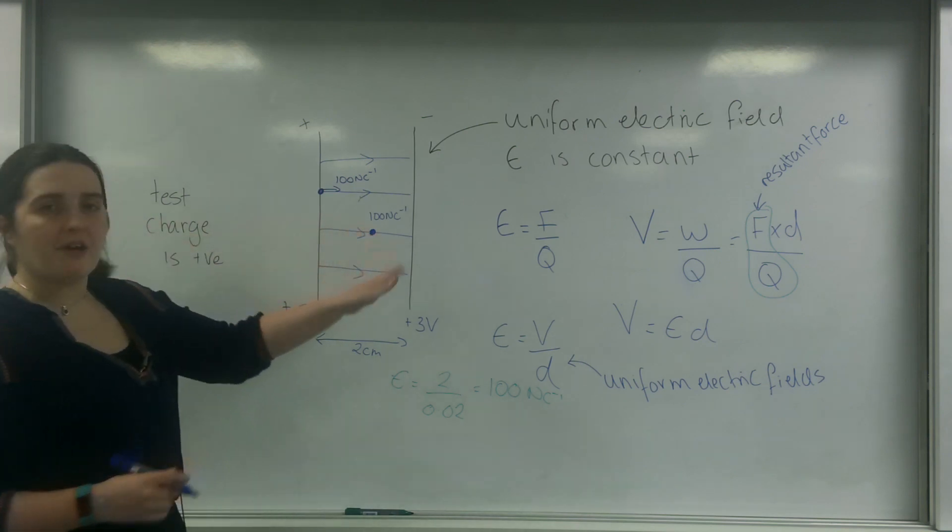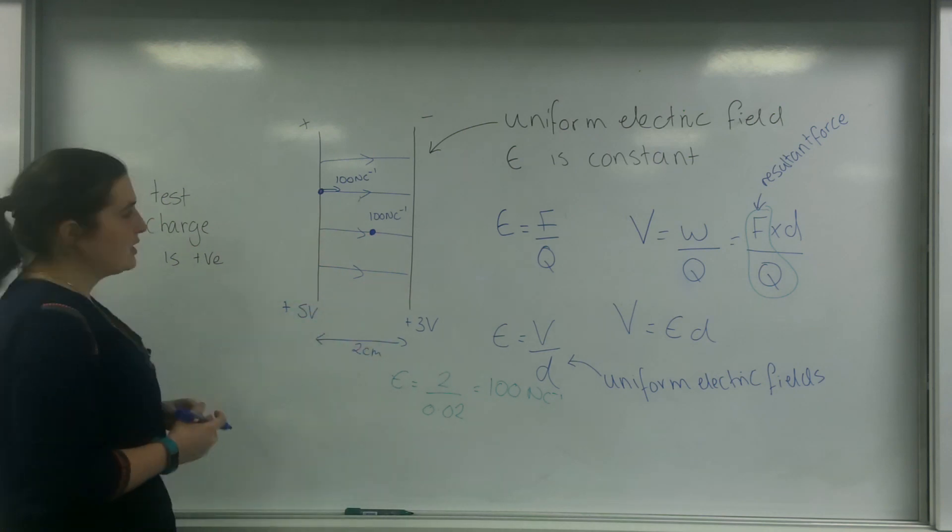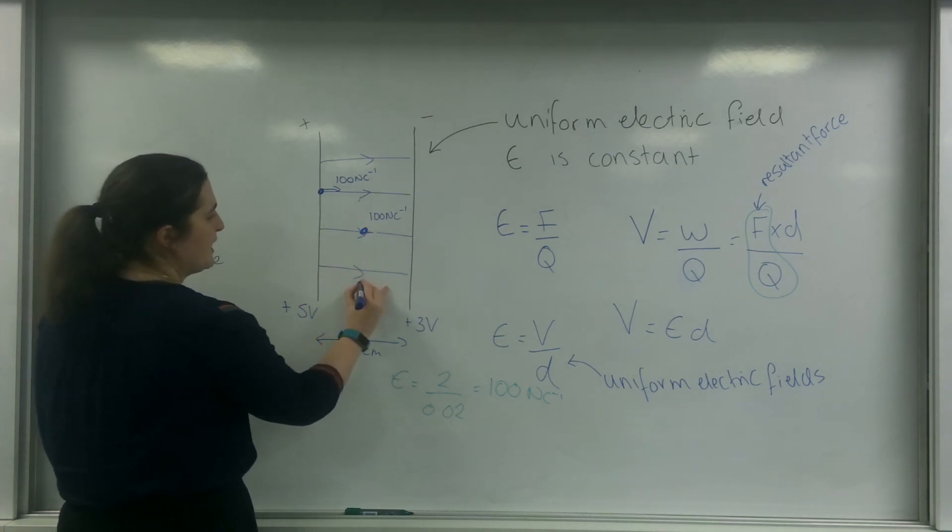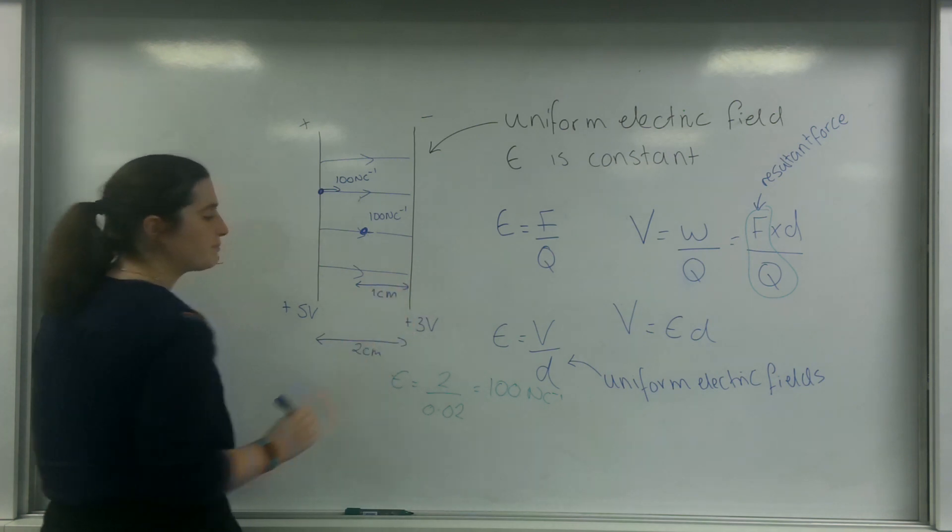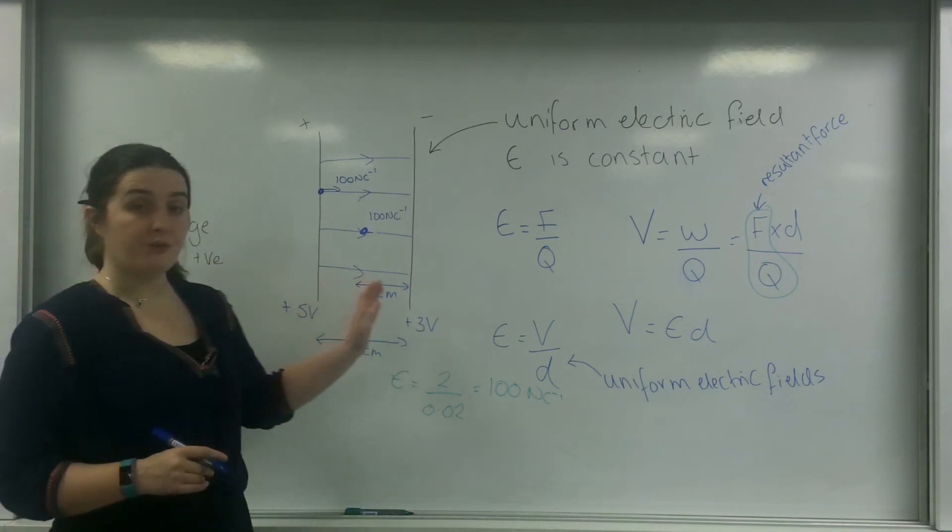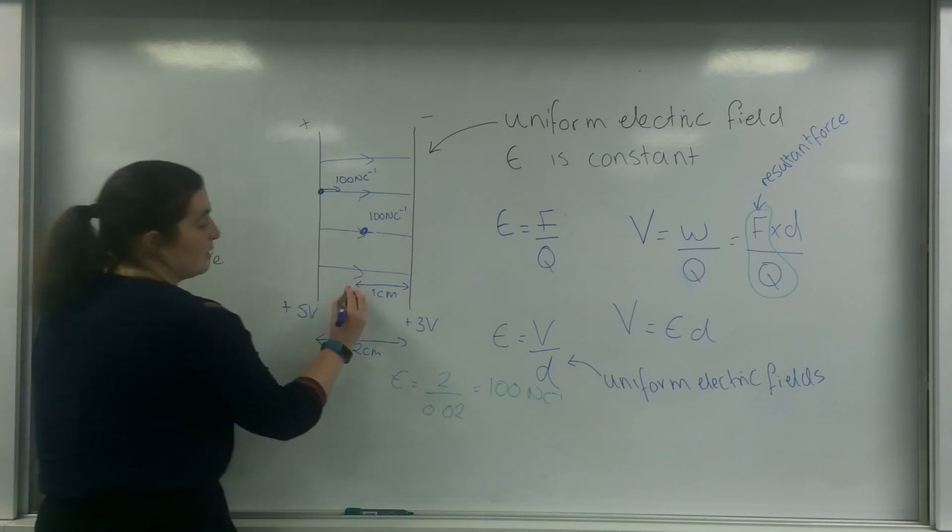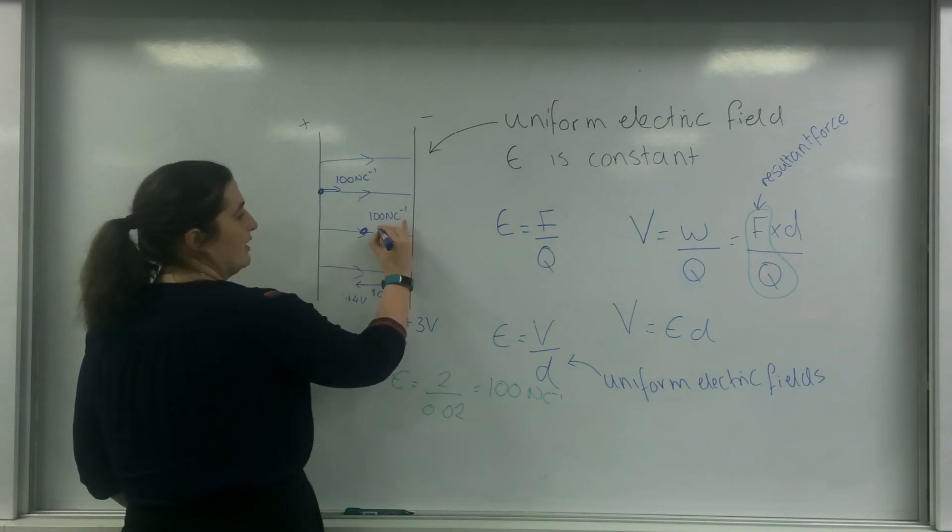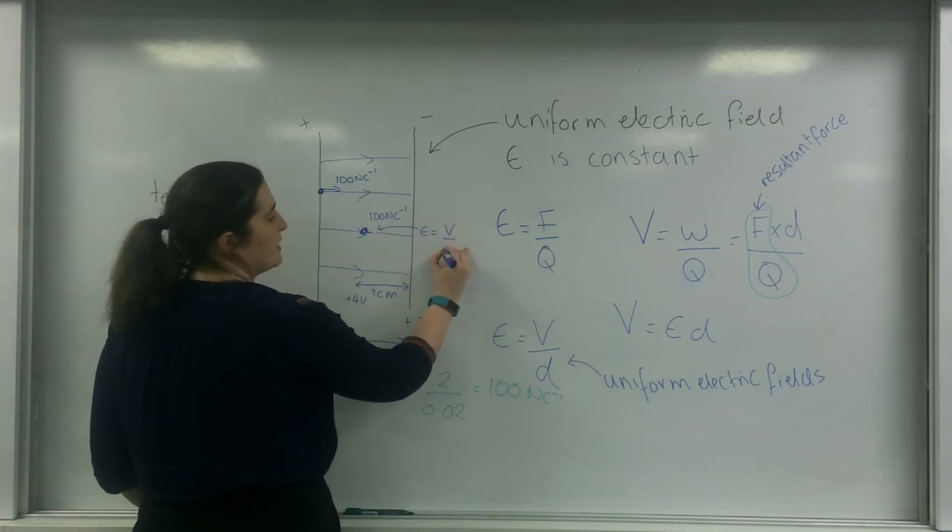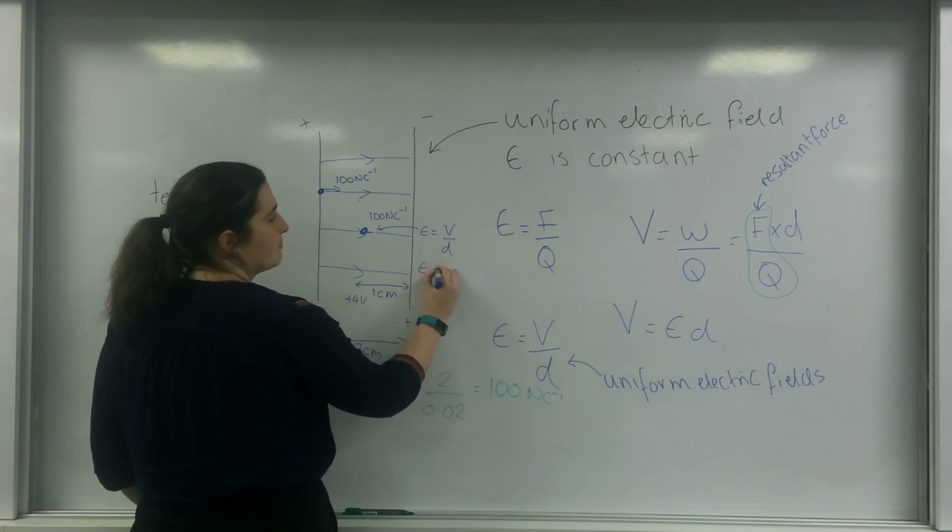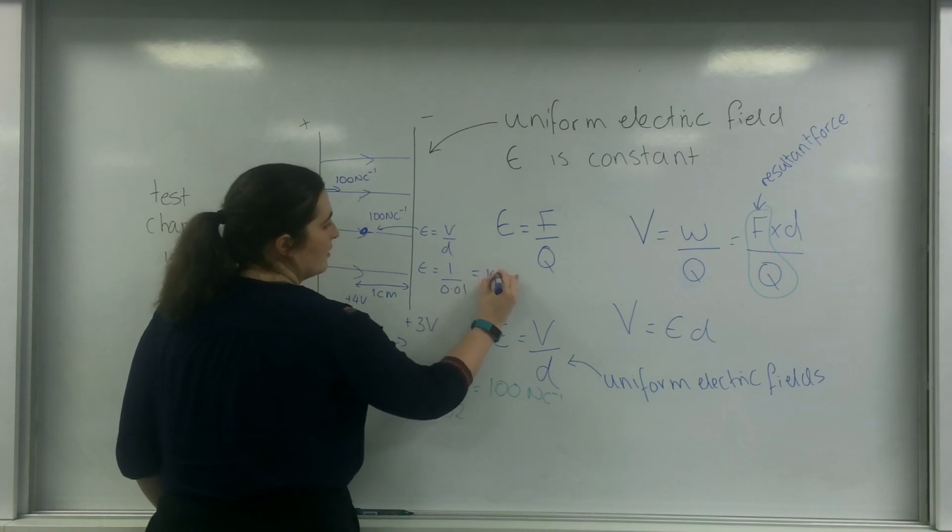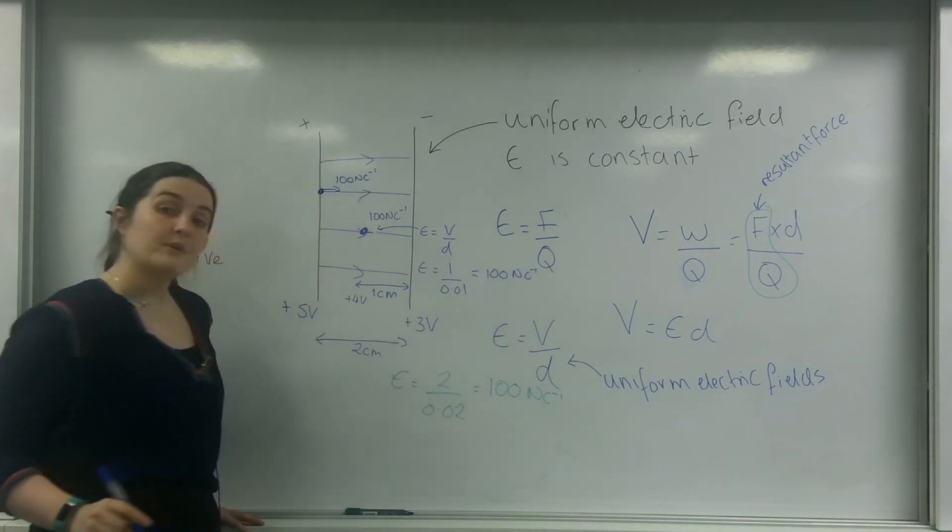Now, these two are a very different distance from the edge. Let's say we'll put it halfway. So the distance between here and here is one centimeter. And because my potential is uniform, my potential here is going to be plus four volts. My field strength here, E equals V over D, one divided by 0.01, same field strength.